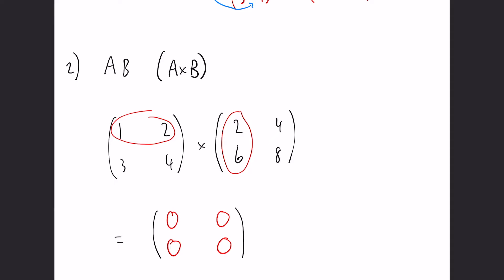For the highlighted position, we do 1 times 2 plus 2 times 6. So 1 times 2 is 2 and 2 times 6 is 12, giving us 14. For the upper right corner, it's in the first row but the second column, so we use those values.